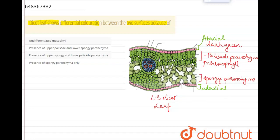Now, on the adaxial side, because of the presence of spongy parenchyma, you can see that the chlorophyll is comparatively low.